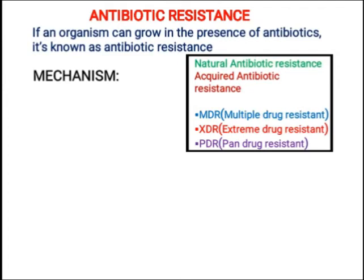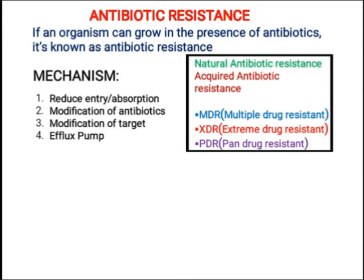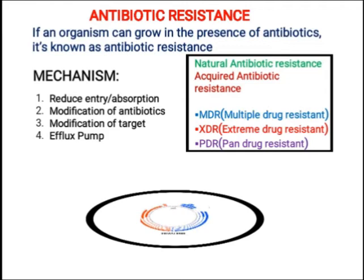اب یہ antibiotic resistance کیوں آ رہی ہے — اس کی کچھ mechanisms ہیں۔ بیکٹیریا ان mechanisms کو follow کرتے ہیں اور ان mechanism کے through antibiotic resistance achieve کرتے ہیں۔ First mechanism ہے: reduce the entry of antibiotic. Then we have modification of antibiotics, then modification of target, and finally efflux pump.